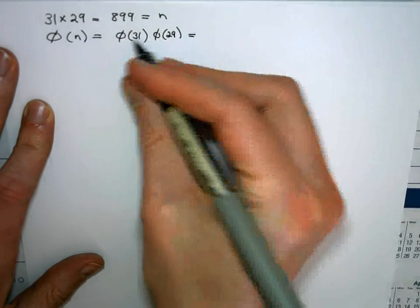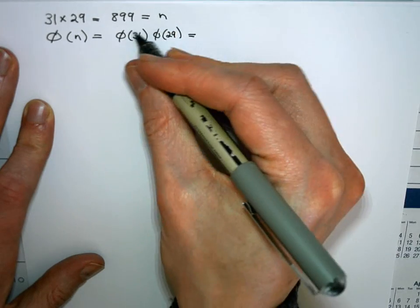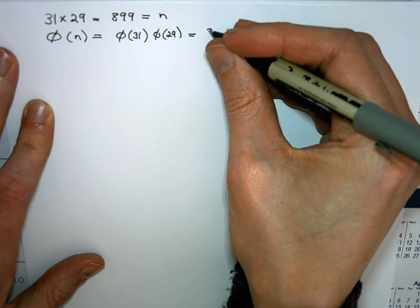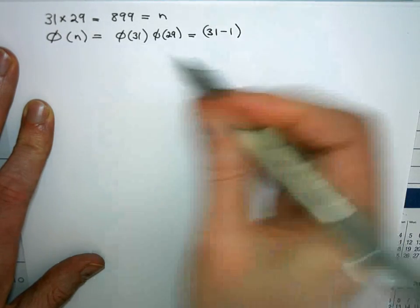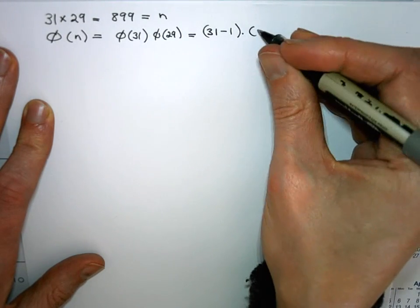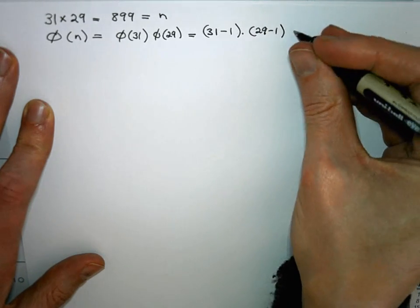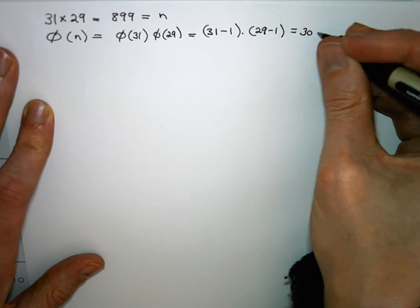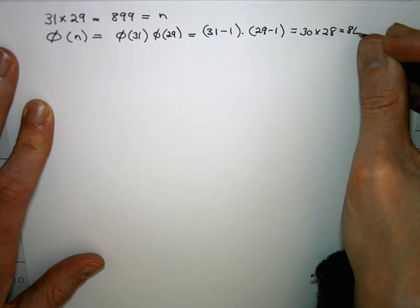And because once again these two are prime numbers, φ of a prime number is just one less than the prime number. So this is going to give me 31 minus 1, that's φ(31), and φ(29) is going to be 29 minus 1. So that is 30 times 28 which is 840.